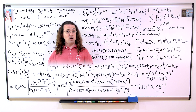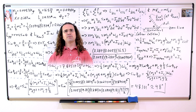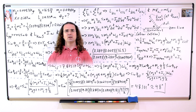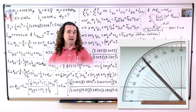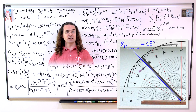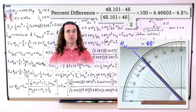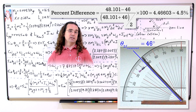Plugging in numbers, we get 48 degrees with two significant digits. So 48 degrees is our predicted final angle of the cardboard. Now let's see what the measured final angle is. As you can see, it is roughly 46 degrees. That means the percentage difference between our predicted and measured final angle works out to be roughly 4.5 percent, which is pretty close.